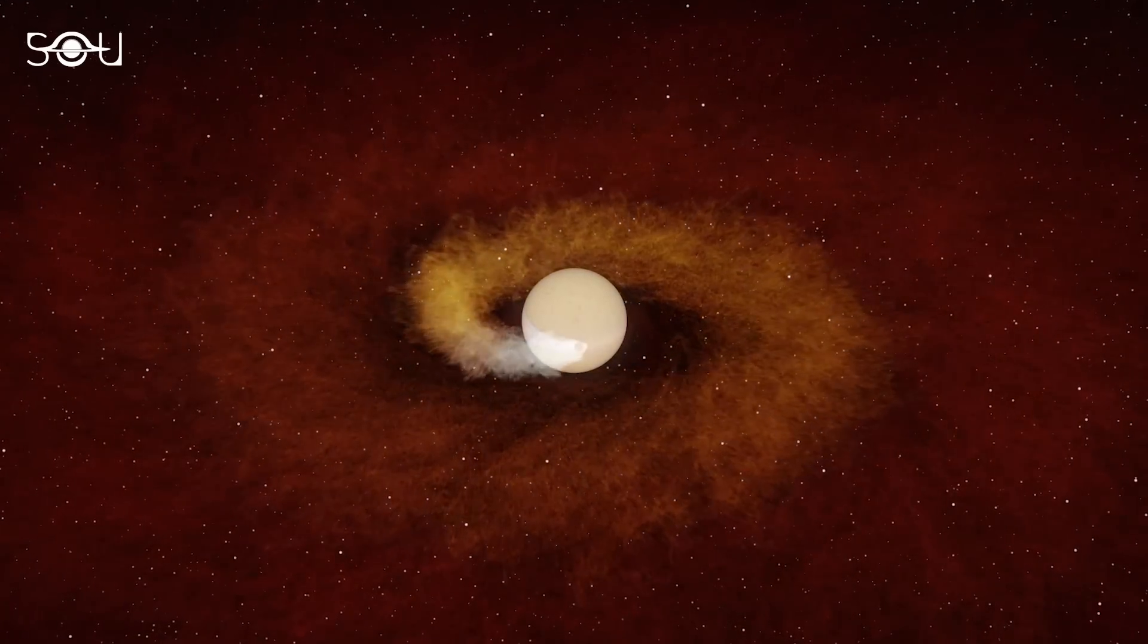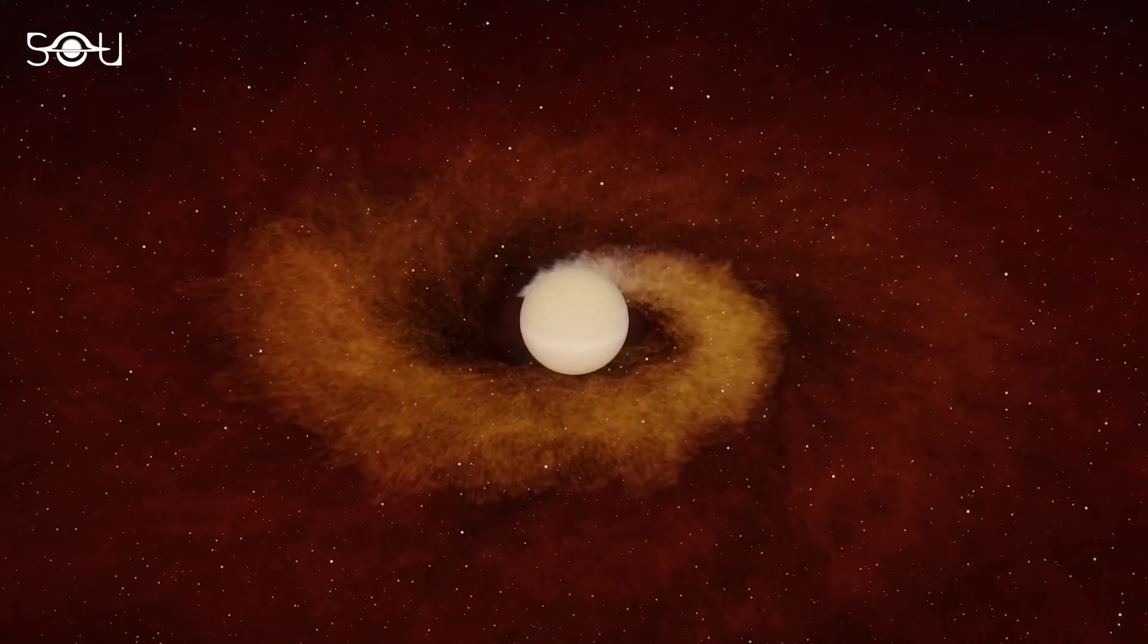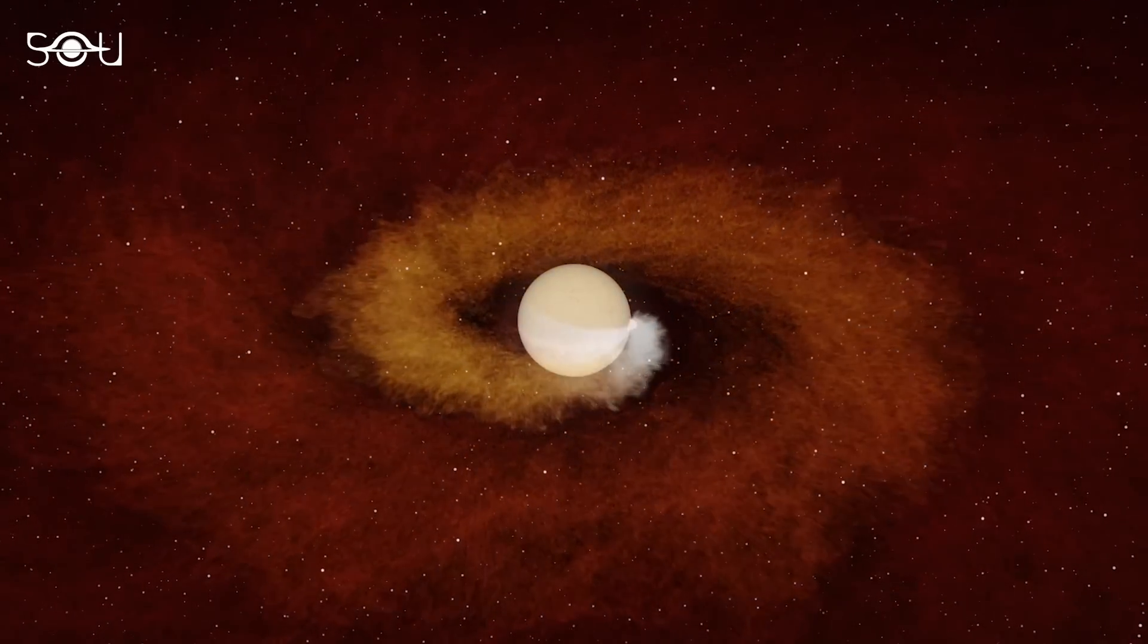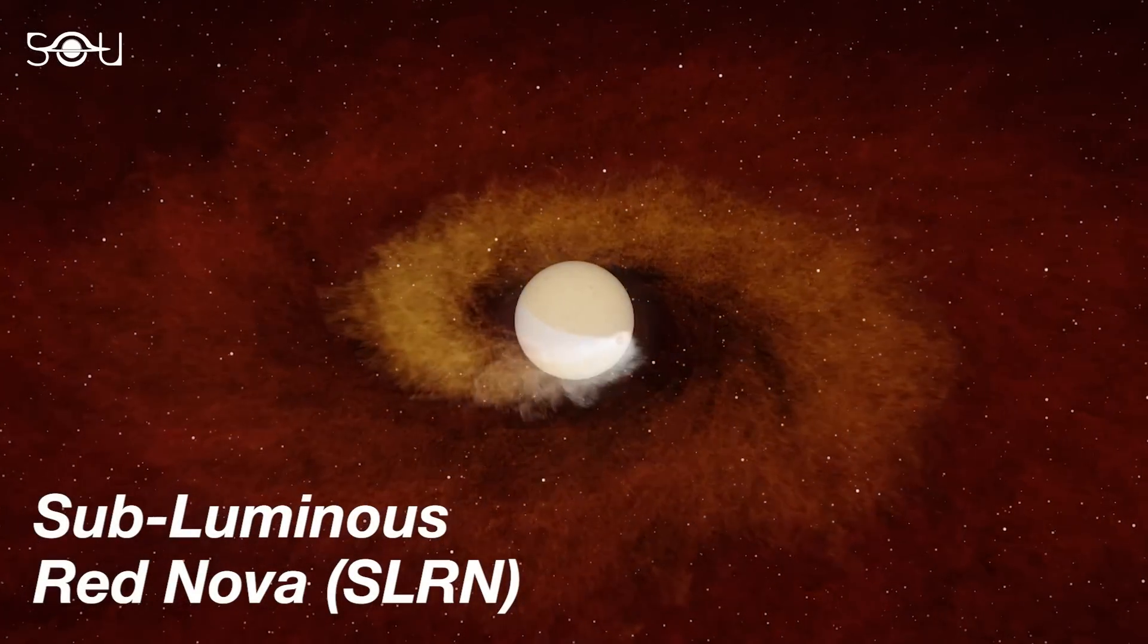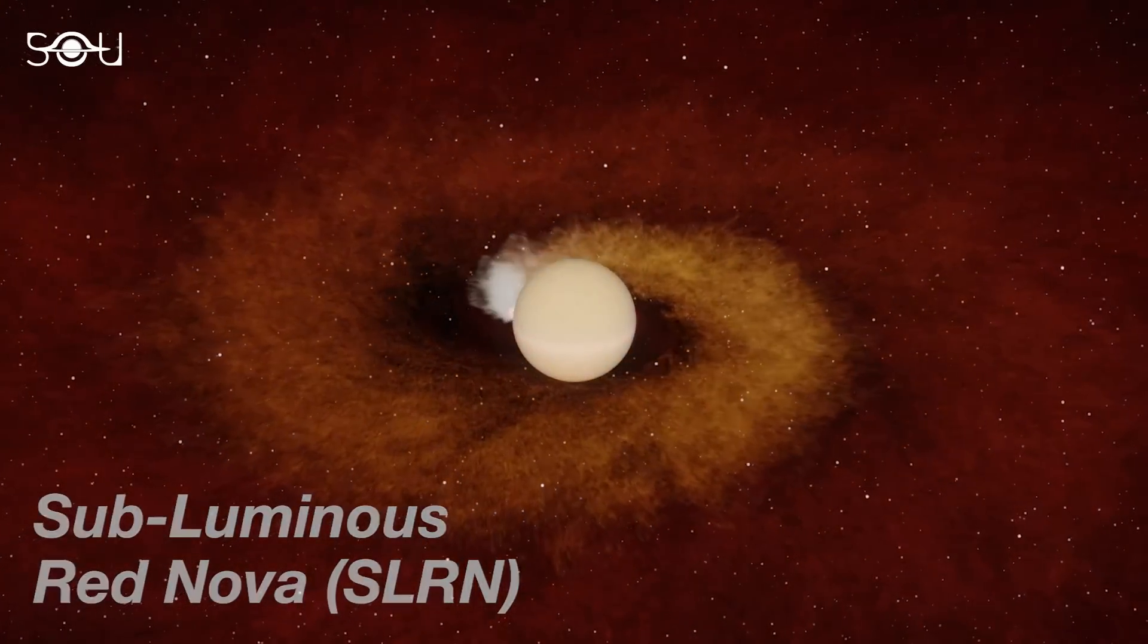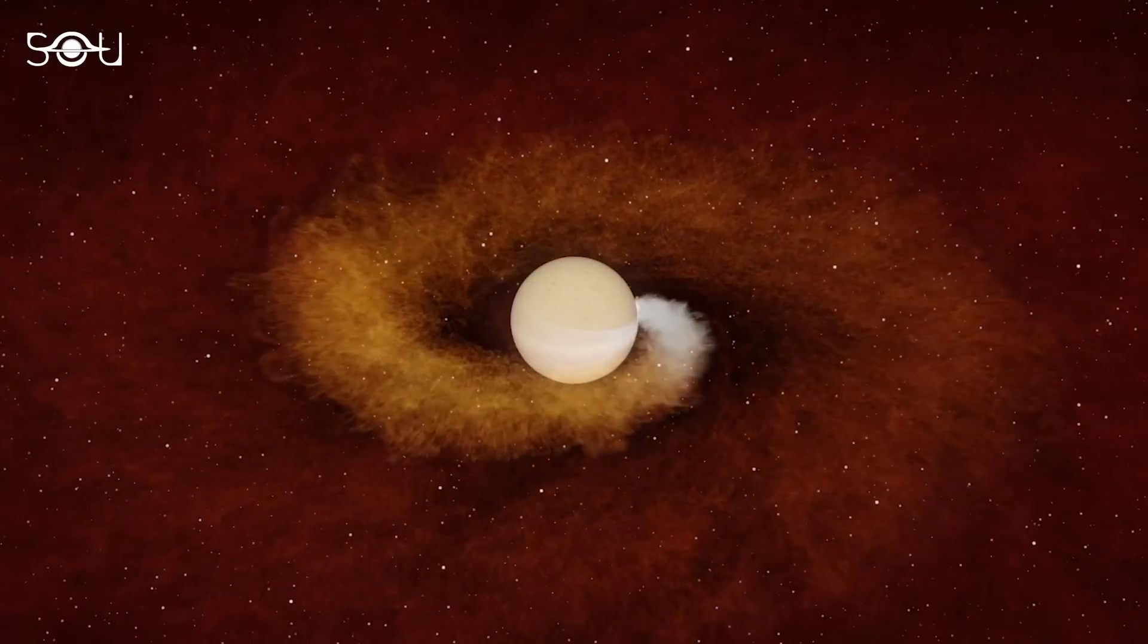This type of celestial event, where a star engulfs its own planet, is now referred to as a subluminous red nova, a term that can informally describe an event less luminous than a typical red nova.